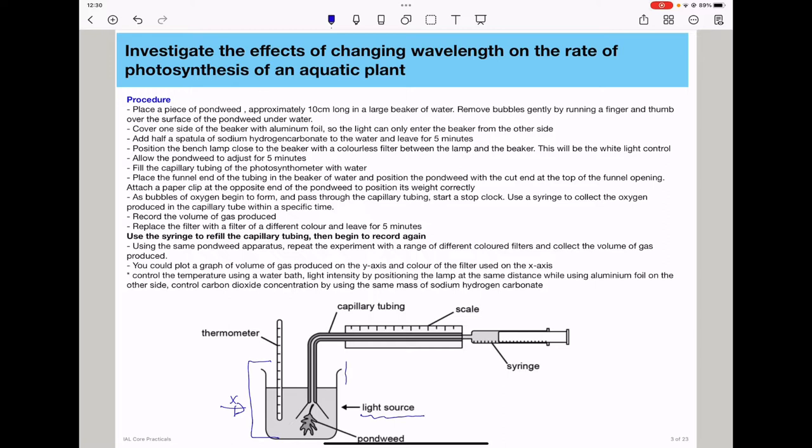We also put a specific filter in between the light source and the experimental setup so that we can control the wavelength. Remember, there are many colored light filters that will provide a specific wavelength based on the experimental setup. So my procedure is as follows.